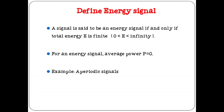Define energy signal. A signal is said to be an energy signal if and only if the value of the energy is finite and power is 0. Finite means the value lies between 0 to infinity. Example: aperiodic signals.